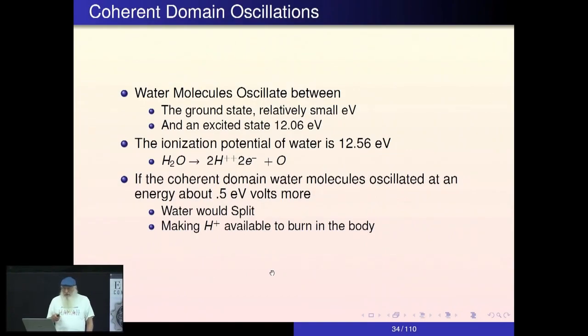We look at the oscillations—the water molecules oscillate between the ground state, which is a relatively small eV like around a half or something like that, and the excited state which is 12.06 eV. Think about this: the ionization potential of water, that is how much voltage do you need to begin to ionize water, break it up into oxygen and hydrogen, is a little over 12.5 volts. If the coherent domain water molecules oscillated at an energy of about a half of an electron volt more, the water would split. If that would happen in the body, it would make the resulting hydrogen available to be burned in the body.